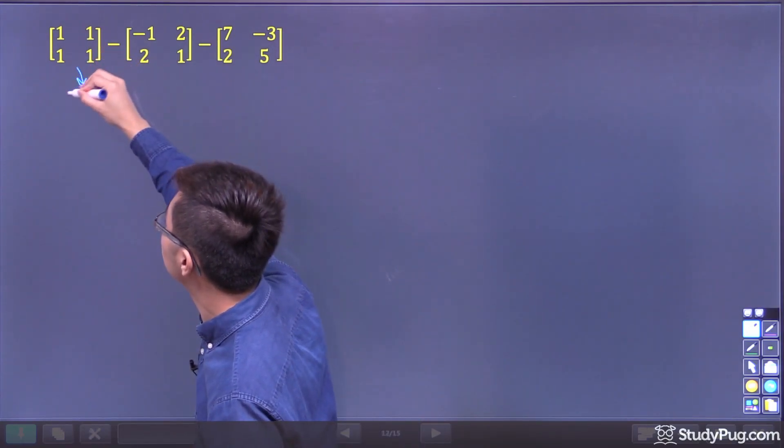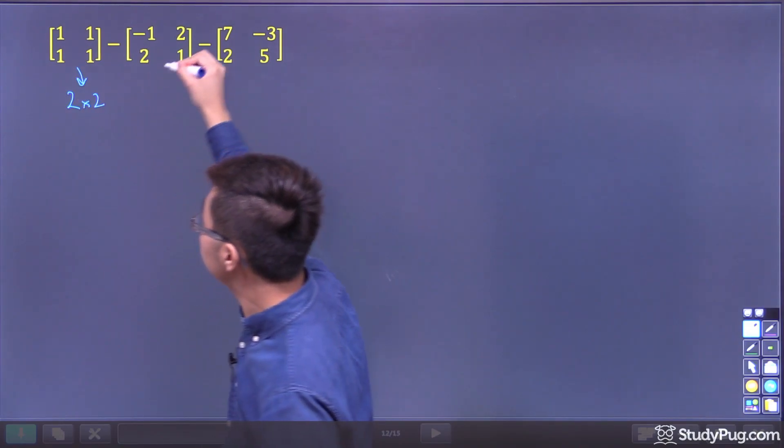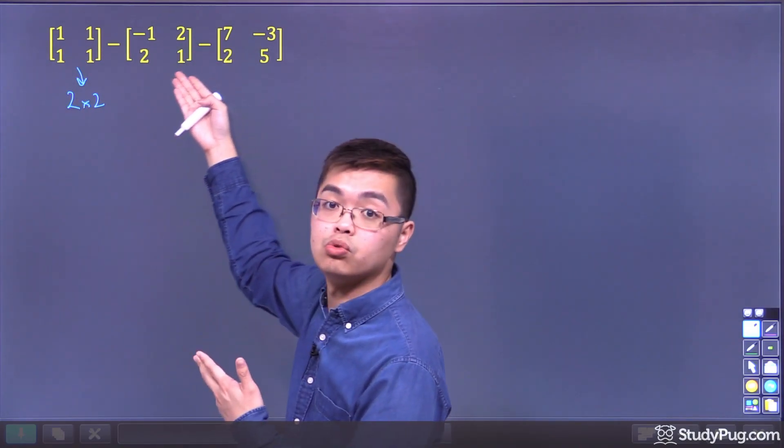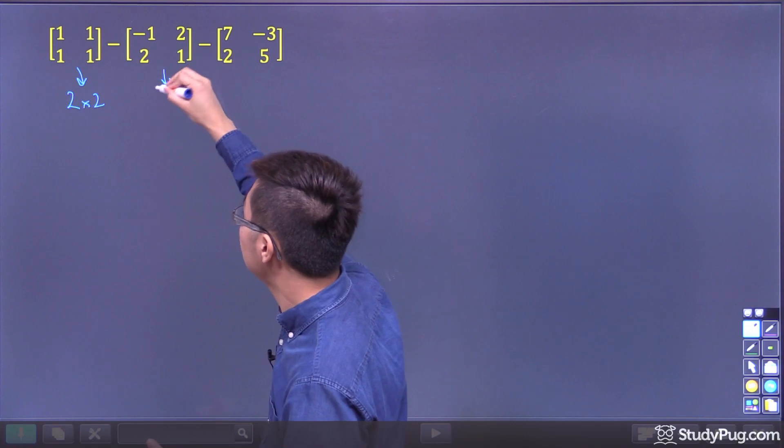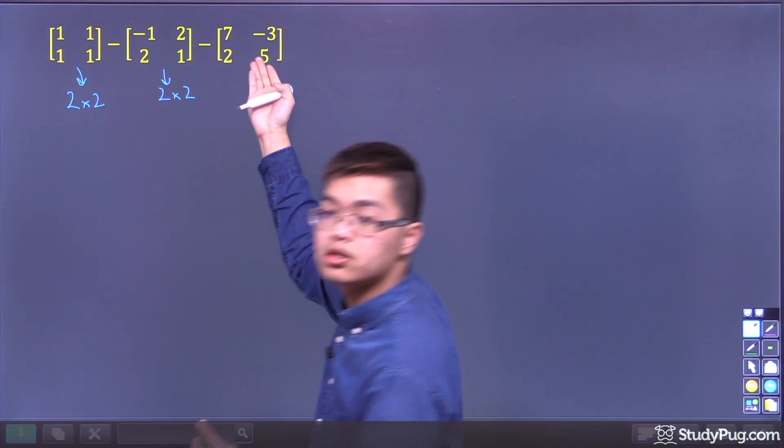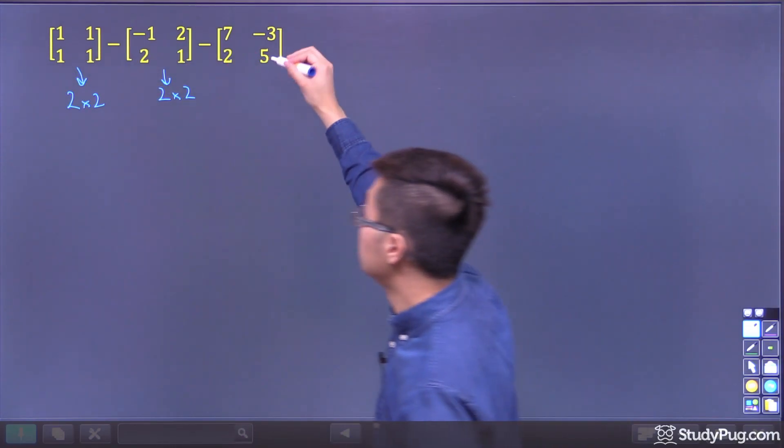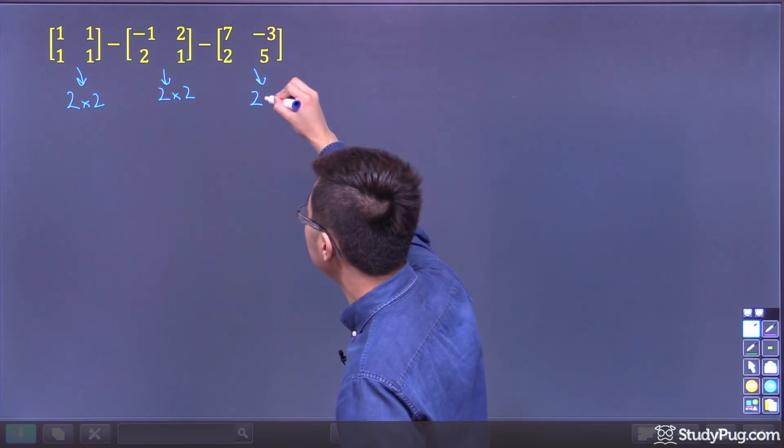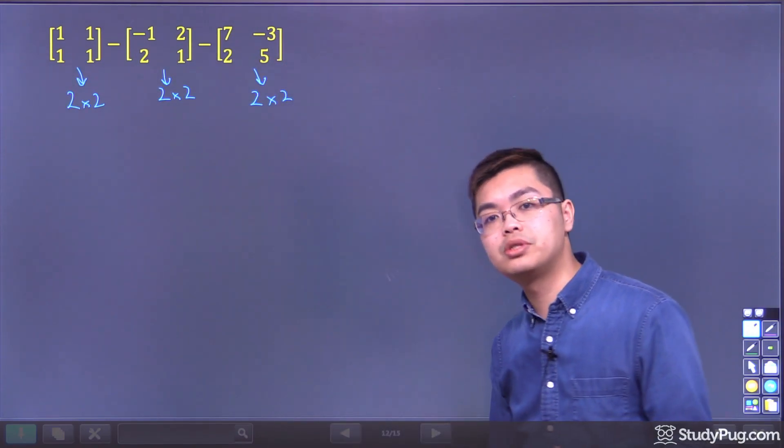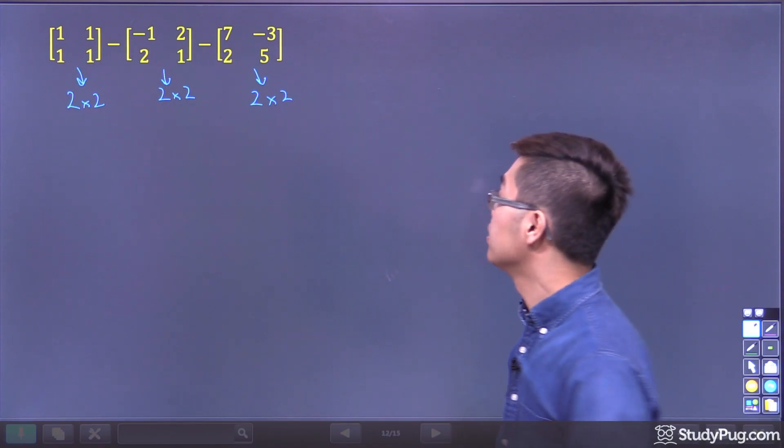So this is a 2 by 2, and you also see that this also has two rows and two columns. This is also a 2 by 2, and this also has two rows and two columns. So this is a 2 by 2. Since they are all 2 by 2 matrices, you can add and subtract.